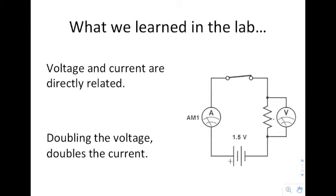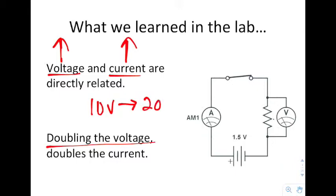Now what we learned in the lab is that voltage and current are directly related. In other words, if you increase the voltage, you will see a corresponding increase in the current. Doubling the voltage, taking the voltage from 10 volts to 20 volts, will always take the current from let's say 2 amps to 4 amps. So if you double the voltage, you double the current.